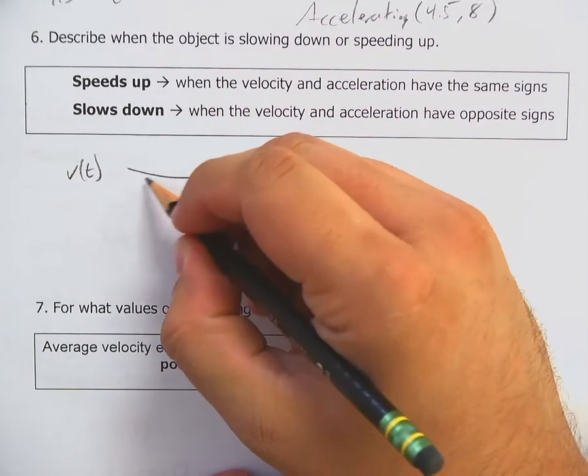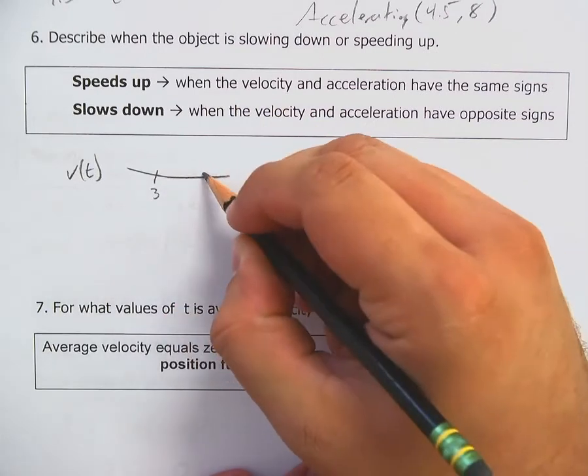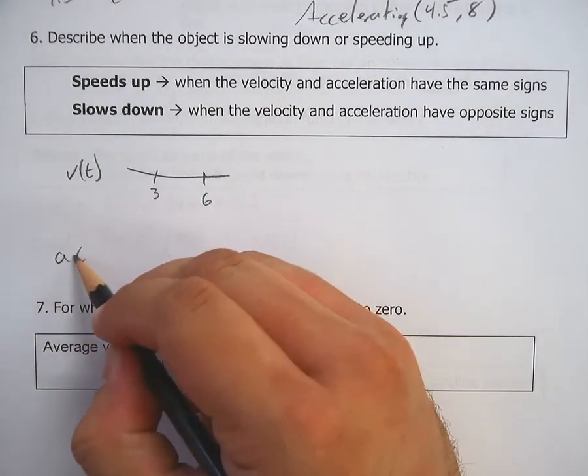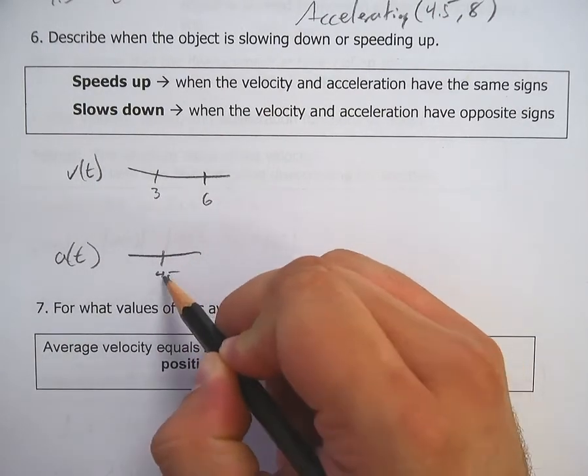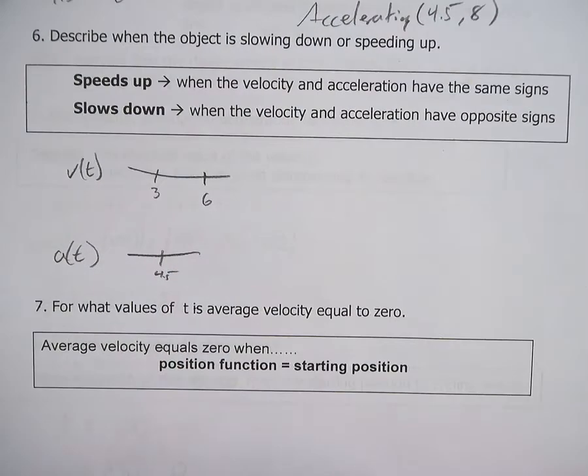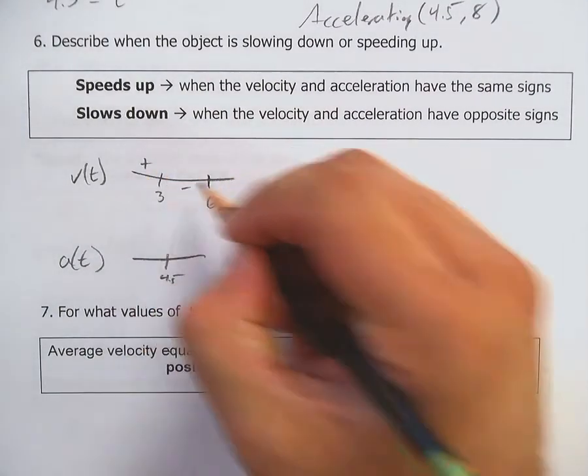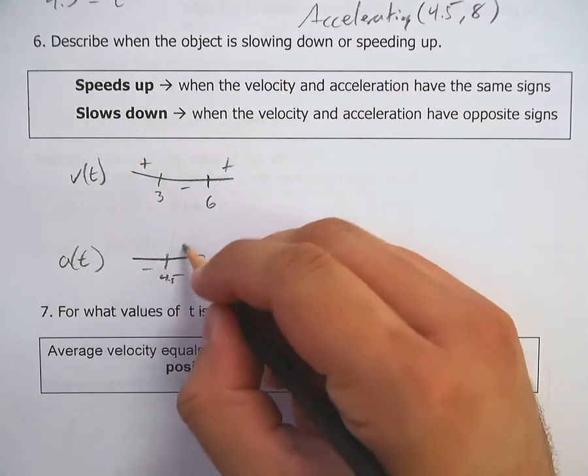V of T. Here's three. Here's six. A of T. Here's 4.5. Right? We've already done a sign analysis here. We know this is positive, negative, positive. And negative, positive.